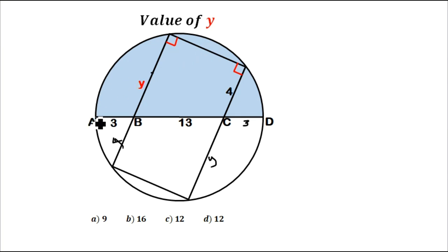Now if you see chord AD and this chord from here up to here, we can see—let this point be E, and this point be F.